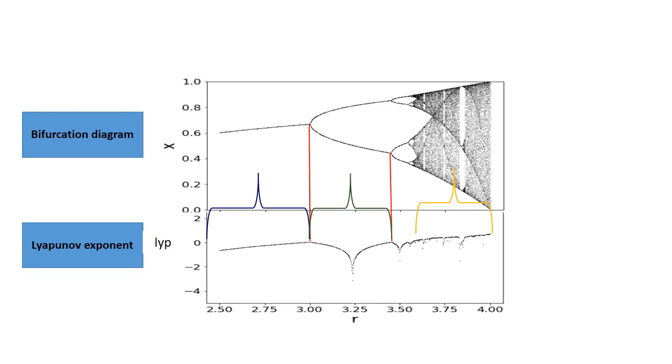Also note that at r is equal to 3.83, the periodic window is visible in the bifurcation diagram and the Lyapunov exponent is negative here.